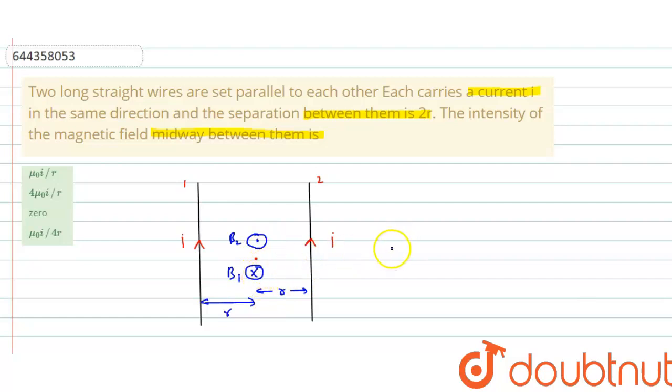So I hope you understood the explanation. This is the correct option: zero. Net magnetic field at the midway is zero because both magnetic fields cancel out each other because they are in opposite directions and have same magnitude.